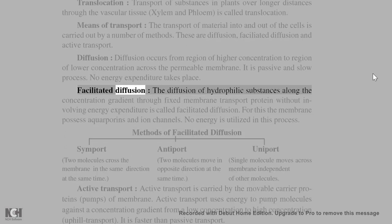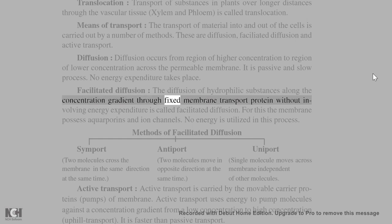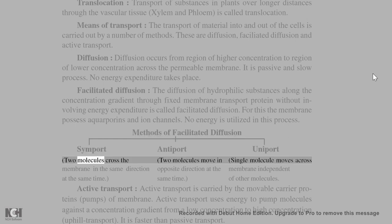Facilitated diffusion: the diffusion of hydrophilic substances along the concentration gradient through fixed membrane transport protein without involving energy expenditure is called facilitated diffusion. For this the membrane possess aquaporins and ion channels. No energy is utilized in this process. Methods of facilitated diffusion: symport, antiport, uniport. Two molecules cross the, two molecules move in, single molecule moves across membrane in the same direction, opposite direction, at the membrane independent at the same time, same time, of other molecules.